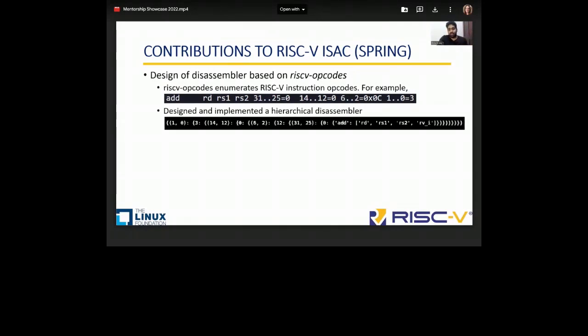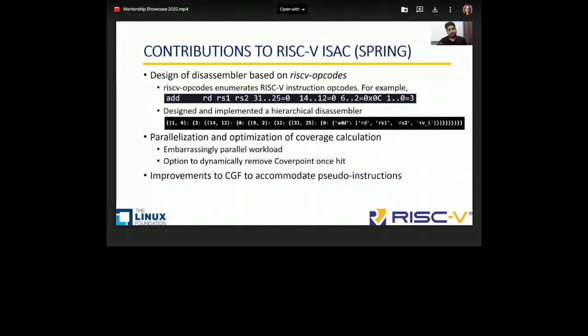Making such changes to the disassembler part gives us a promise that it is immune to future changes. The next task was bringing performance improvements to ISAC. Coverage calculation is an embarrassingly parallel workload. We have both parallelization at the cover group level. We have also added the option to dynamically remove cover points once they are hit. While decoding the trace file, we have made improvements to the cover group format file where we give alternate definitions to a pseudo-instruction.